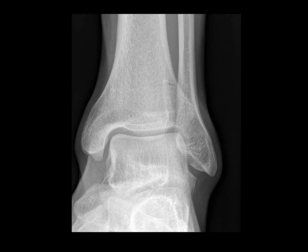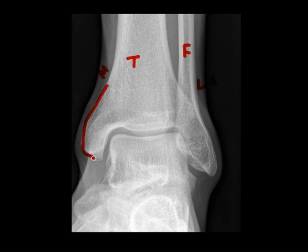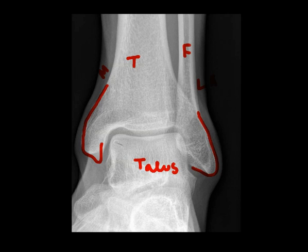The anatomy on ankle radiographs is actually quite simple. For example, we have the fibula on the lateral side, and the tibia on the medial side. The tibia flares to form a projection called the medial malleolus. Similarly, the fibula forms a projection at its tip called the lateral malleolus. This bone is the talus. The articular surface of the talus is called the talus dome, and the articular surface of the tibia is called the tibial plafond.